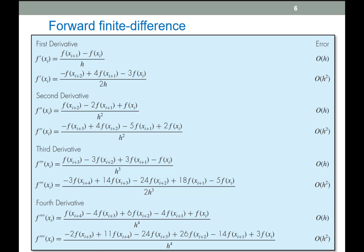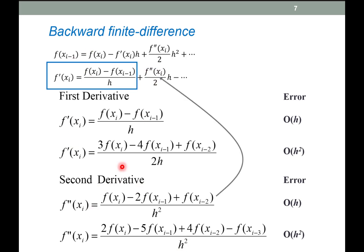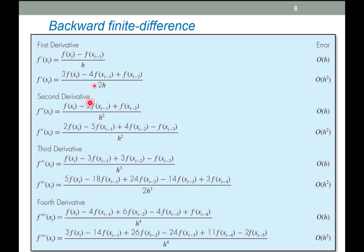We can do the same thing with the backward finite difference. We take the second derivative using the backward finite difference, plug it in, and get the corresponding expression. Again, the same process — and we get a chart showing first, second, third, and fourth derivatives for the backward case, where all the points go backward from where we're solving for the derivative.